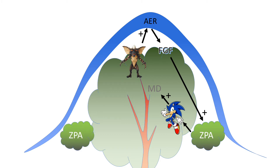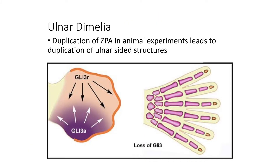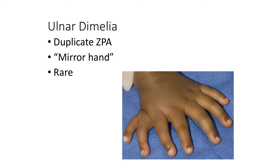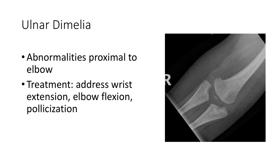If you can have dysfunction, you can also have two ZPAs. Two ZPAs means a higher concentration of sonic hedgehog, which means ulnar dimelia. Ulnar dimelia is two ulnar sides of the hand, because both sides are being told by each respective ZPA to become an ulnar side, and you get a mirror hand. We see a lot of congenital differences, but I only see about one of these a year. It can also affect structures proximal to the elbow, and treatment is based on the patient's symptomatology.